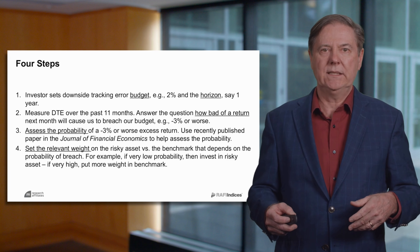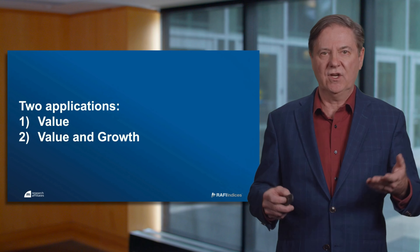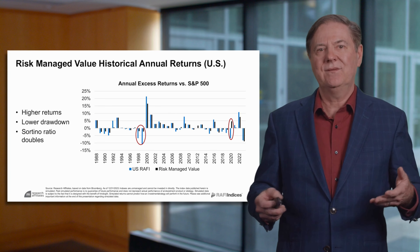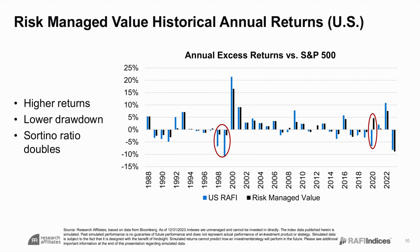The next part is to set the weight. If the portfolio is expected to have a minus three percent or less return, then you allocate more towards the benchmark. If the probability is really small that you're going to get minus three percent or worse, then you stick with your risky portfolio. This is the essential idea. Value is one application we've seen already — here it's shown year by year. The downside improvement is clear. It also delivers higher expected returns, and the Sortino ratio doubles. The Sortino ratio is the excess return divided by the downside tracking error — I think this is the right way to look at the expected return and risk tradeoff.